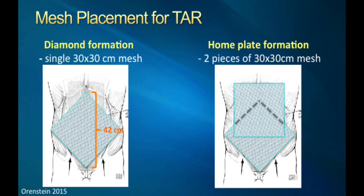For larger defects or atypical hernias in the sub-xiphoid or suprapubic space, I'll do a home plate configuration where I get two overlapping pieces of 30x30 mesh with the diamond pulled more inferiorly, and then a squared mesh in the superior aspect. With a nice TAR dissection that creates a wide space, that square top edge of the home plate can go underneath the xiphoid and underneath the costal margin bilaterally.